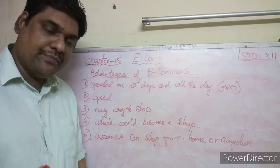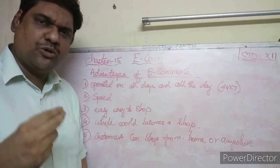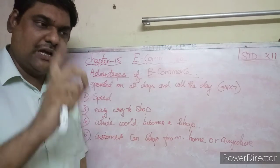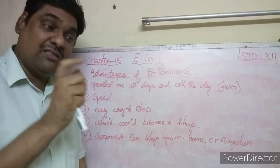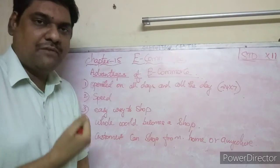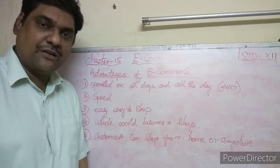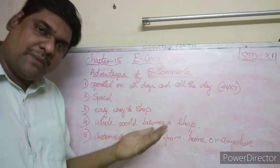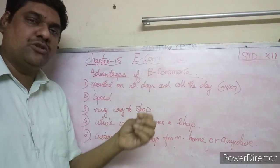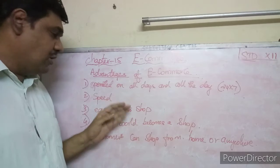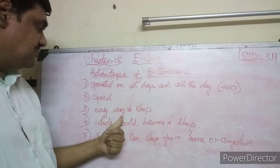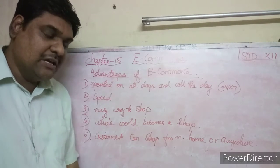The second advantage is speed. Within a fraction of seconds or two to three minutes, you can order any product from around the world. The order placement is very fast — within seconds or minutes you can order the product very easily. Delivery will take some time, but ordering itself is very quick.